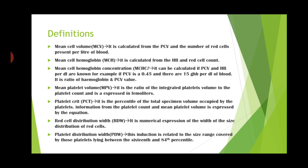First we will see the definition of MCV, that is Mean Cell Volume. It is calculated from the PCV and the number of red cells present per liter of blood. Next, MCH, that is Mean Cell Hemoglobin. It is calculated from the HB and red cell count. Mean Cell Hemoglobin Concentration, that is MCHC, it can be calculated if PCV and HB per dL are known.